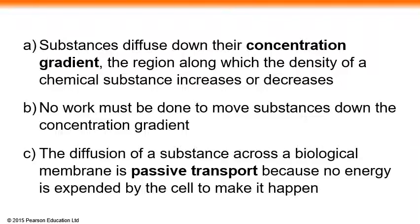What is a concentration gradient? In Korean that's '농도기울기.' Substances diffuse down their concentration gradient from higher concentration to lower concentration. The concentration gradient is the region along which the density of a chemical substance increases or decreases. No work must be done to move substances down the concentration gradient. The diffusion of a substance across a biological membrane is passive transport because no energy is expended by the cell.